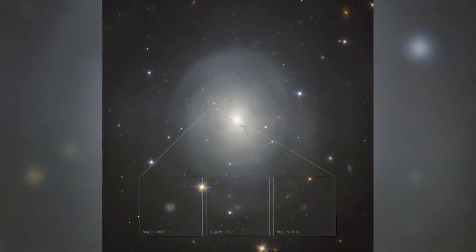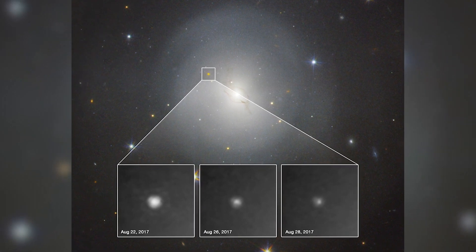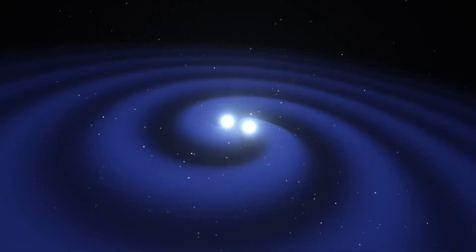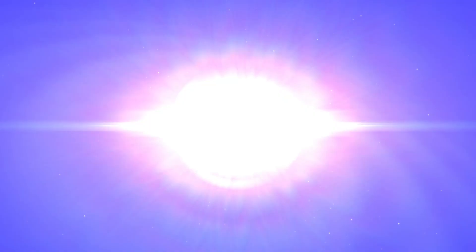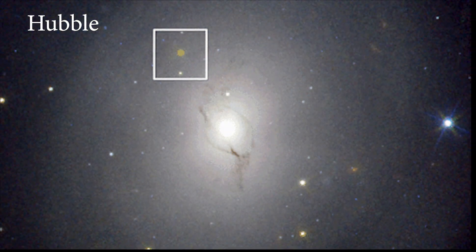The explosive event observed on August 17, 2017, was the first combined detection of gravitational waves and gamma radiation from the merger of binary neutron stars. This discovery prompted scientists to quickly aim Hubble at the site of the explosion.